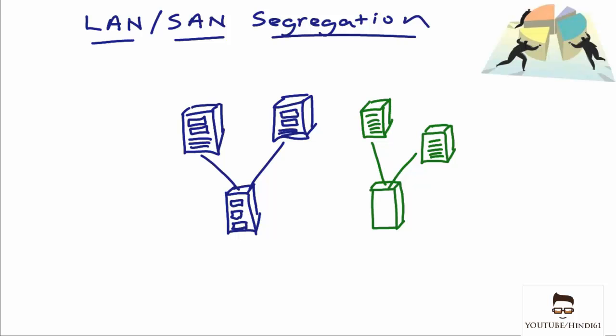Why is it that we so often see the local area network completely segregated from the storage area network? There is a real attempt to keep the local area network traffic and the storage area network traffic separate.